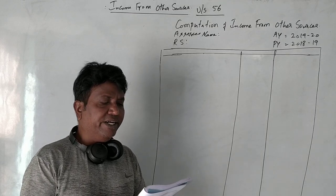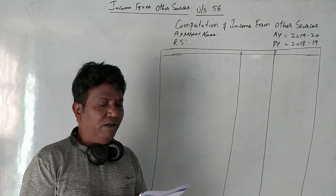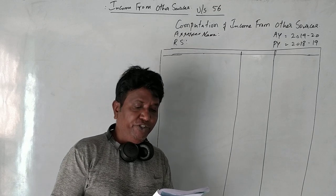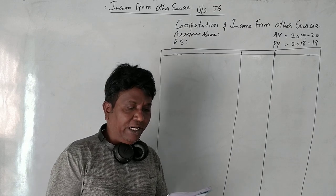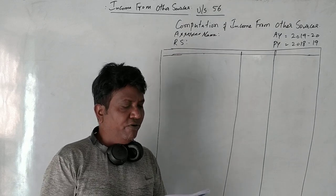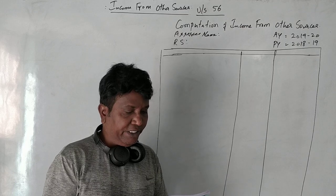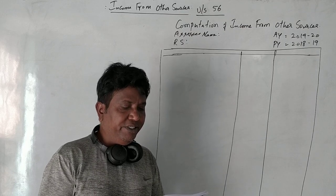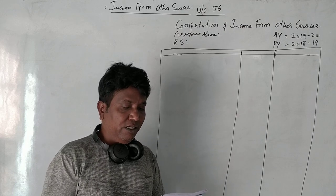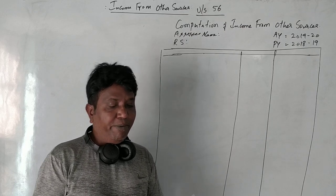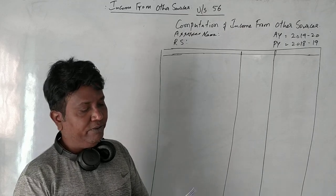Composite rent of building along with the machinery is ₹2,50,000. The following are the expenses on machinery: depreciation ₹8,000 and repairs ₹4,000.